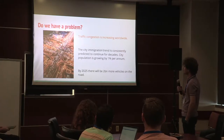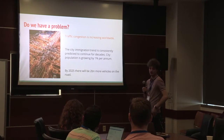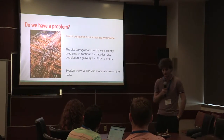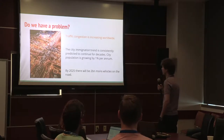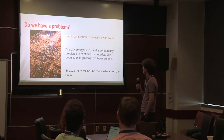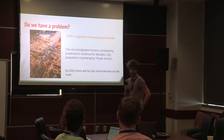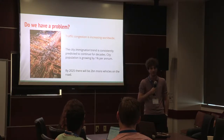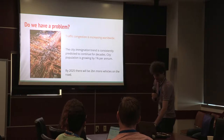On one hand, because of the city immigration trend, city population is expected to grow and is currently growing every year by 1%. This is also leading to more vehicles on the road because people still prefer to use vehicles rather than public transport. It is expected that in six years' time there will be two billion more vehicles on our roads. So we have a problem now, and it's going to last for a while.